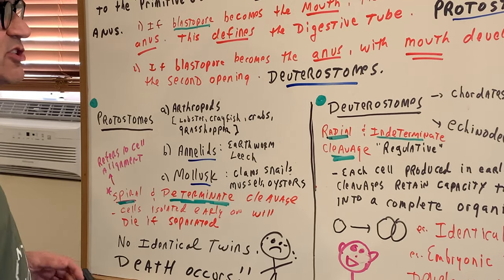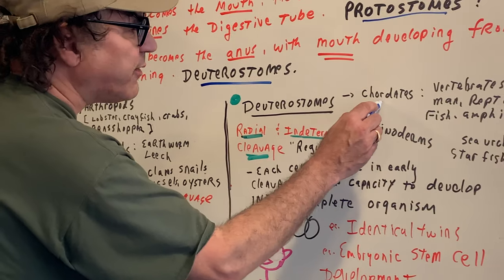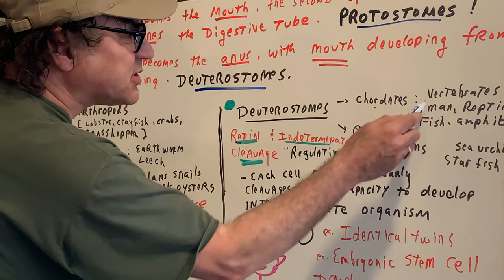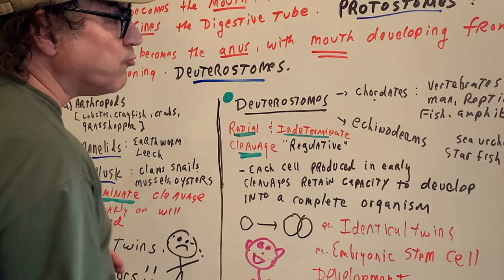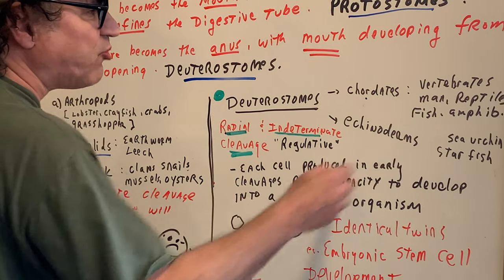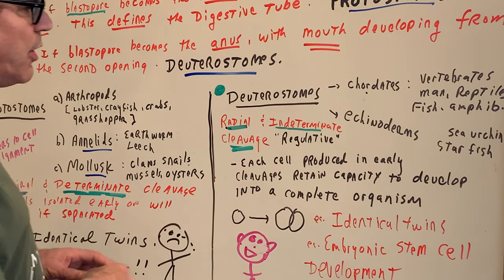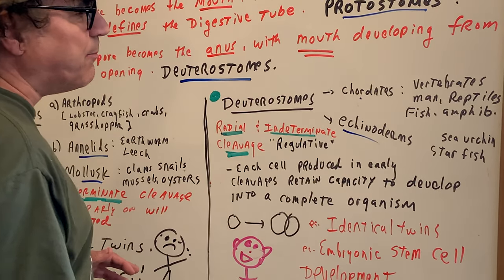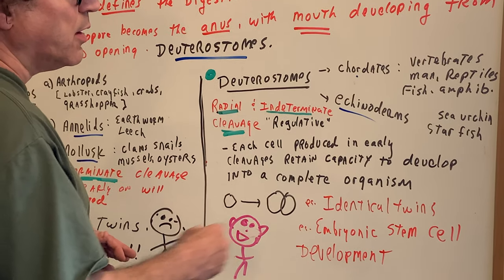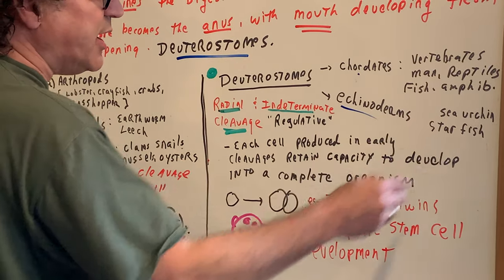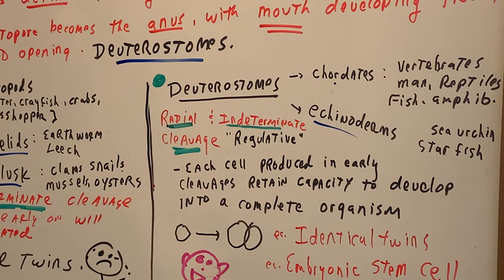A deuterostome includes the chordates like us — vertebrates, mammals, reptiles, fish, amphibians, which I discussed in the other lecture. Deuterostomes could also be the echinoderms, which include sea urchins and starfish.